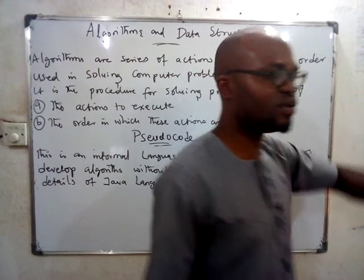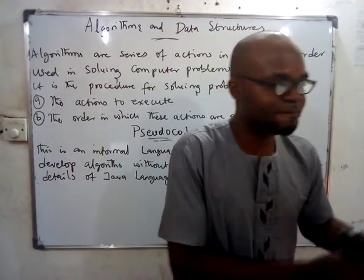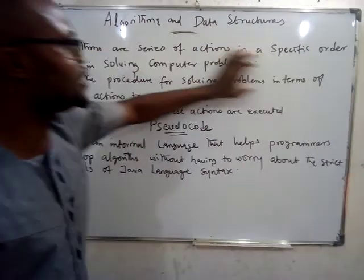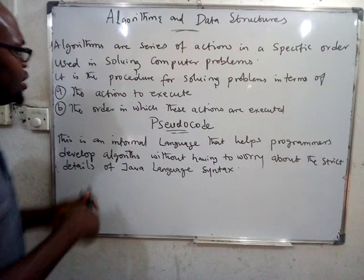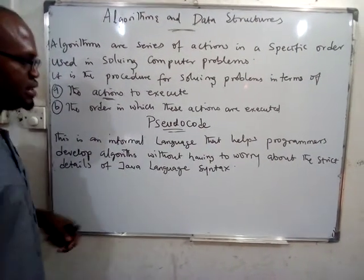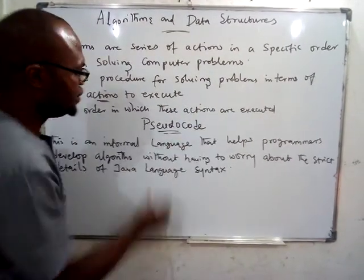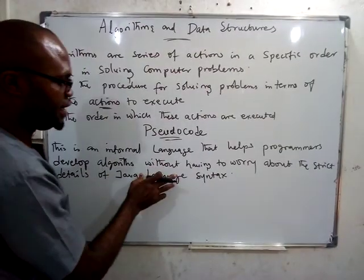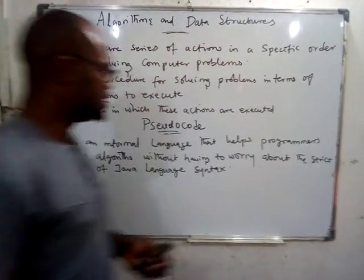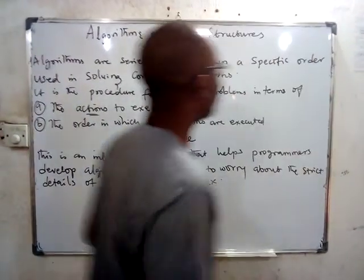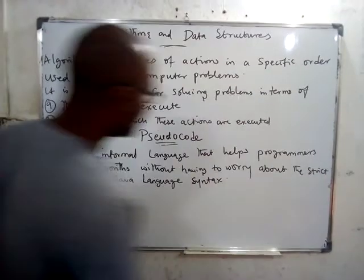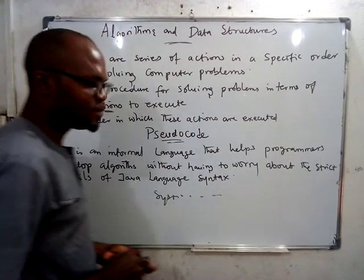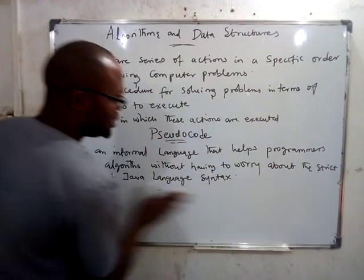What sort of problem have you solved by going to school? To go to school, you have to take some actions, and those actions written out in the order in which they are taken is an algorithm. So an algorithm is a procedure for solving a problem in terms of the actions to execute and the order in which they are executed. To represent an algorithm in writing, you use a language known as pseudocode. Pseudocode is an informal language that helps programmers develop algorithms without having to worry about the strict details of language syntax.